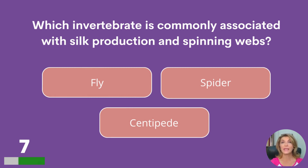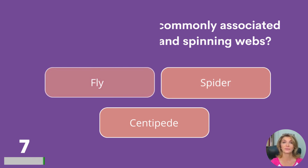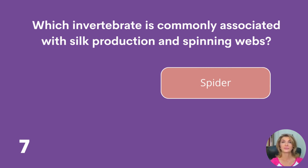Which invertebrate is commonly associated with silk production and spinning webs: fly, spider, or centipede? The spider.